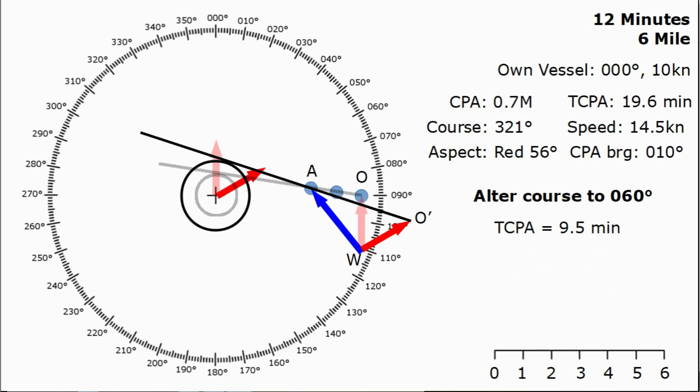Then all we want to do is measure the range, the radius of our ring to work out the new closest point of approach. Overlaying our scale bar again, we see the CPA is now going to be 1.2 miles. From all this we can see after our course alteration the new TCPA is going to be 9.5 minutes time and the CPA is going to be 1.2 miles.